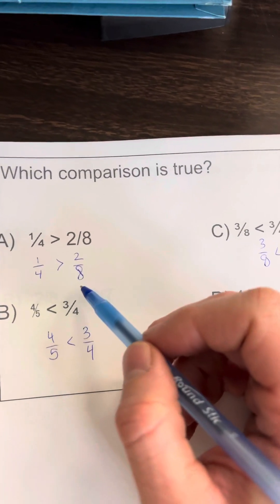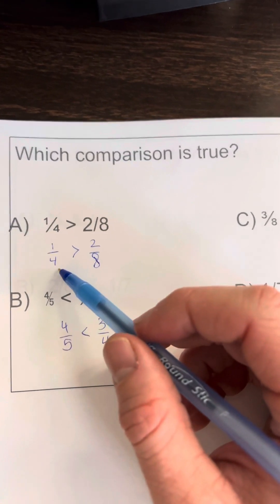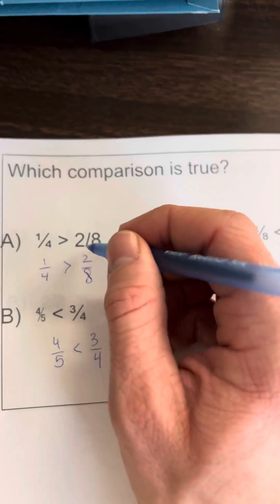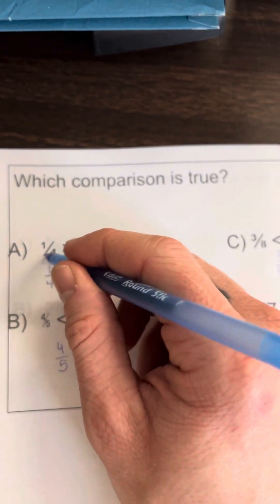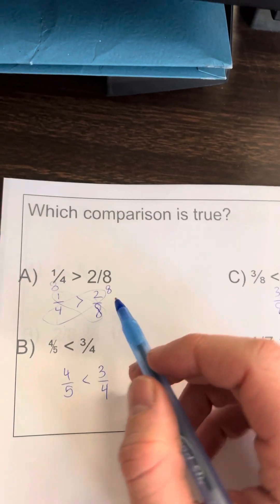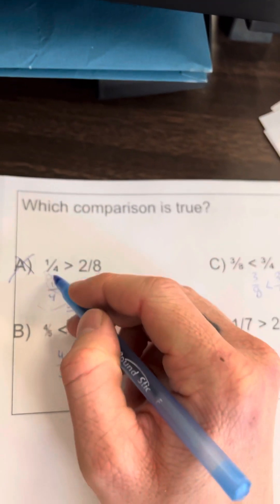So to check if it's true, I'm gonna compare these fractions by—well, I could change them to have a common denominator, or I can just cross multiply. So to cross multiply, eight and eight—that's that butterfly method I like to call it, or just cross multiplication. Eight and eight are equal, so this should say equal. So one-fourth is greater than two-eighths is not true.